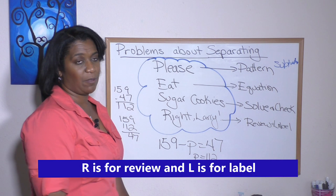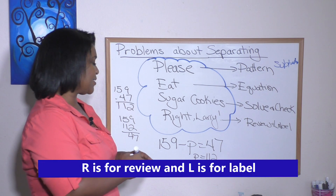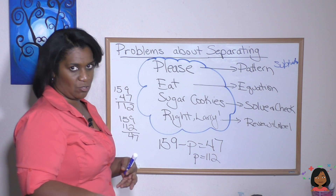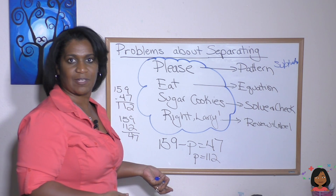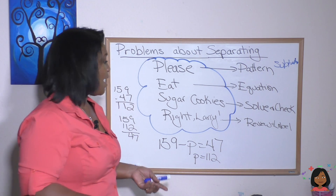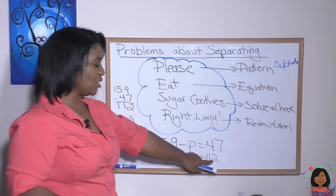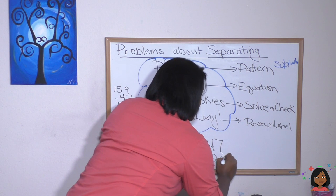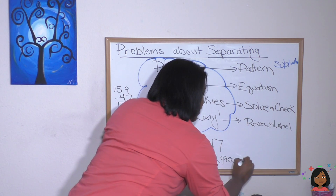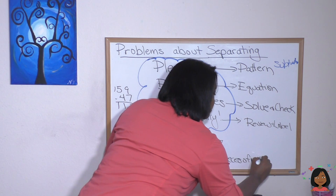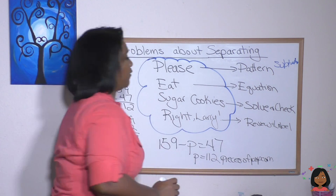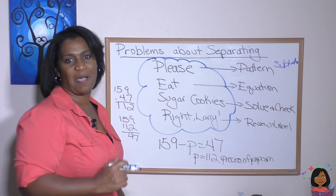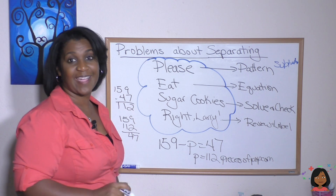And lastly, we review and label. So we look at our problem — does it make sense? If I had 159, then we ate about 112, and I would have 47 left. That makes sense. And we label: 112 pieces of popcorn. That's our label — pieces of popcorn. Please Eat Sugar Cookies Right Larry gives you that structure to know how to solve it. Let's try another one.